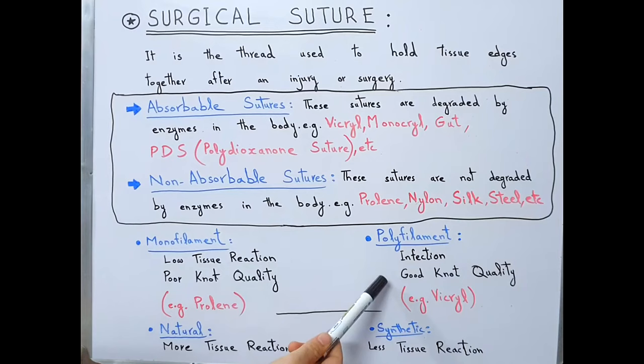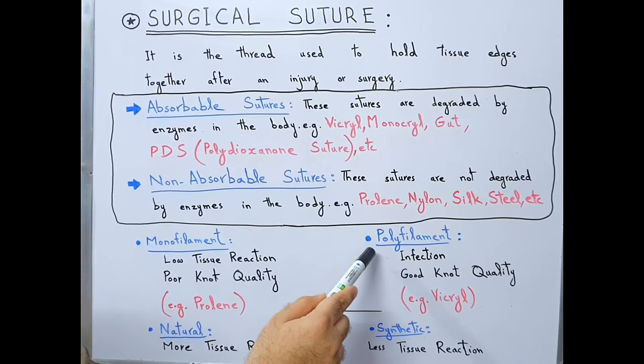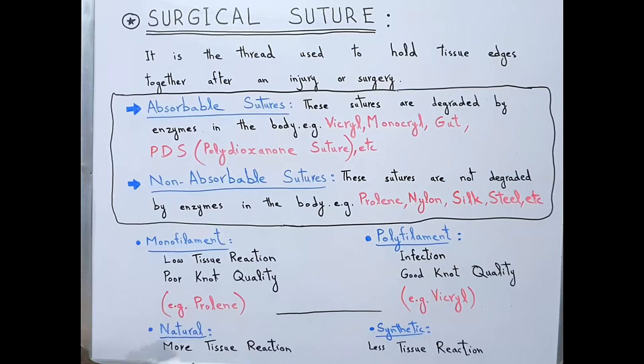On the other hand, polyfilament has good knot quality — knot security is good. But the disadvantage is that it is prone to infection, because bacteria can grow in between the filaments of the polyfilament suture. Therefore, infection is its disadvantage. An example of polyfilament suture is Vicryl.